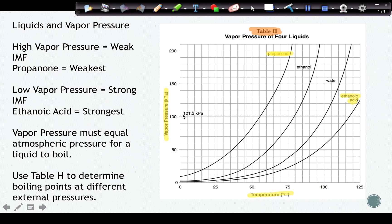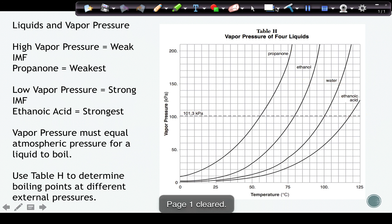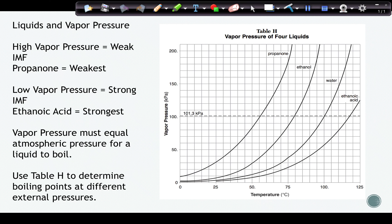We also know that if they give us an external pressure, vapor pressure must equal external pressure for something to boil. Okay, so this line here is standard pressure. When the vapor pressure equals this pressure, this is the normal boiling point for these four liquids. And we can use table H also if they give us a different external pressure, we can find the boiling temperature at the different pressure. As temperature goes up, vapor pressure goes up. And we need to have a closed container to be able to measure the vapor pressure at equilibrium because in order to reach equilibrium, the container must be closed. It must be a closed system.